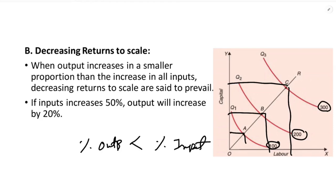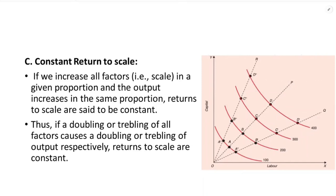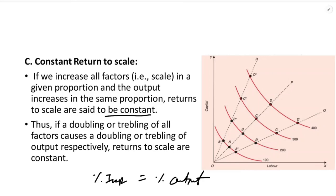The distance between the isoquants gradually increases in the case of diminishing returns to scale. The last one is constant returns to scale, which means when input increases, output increases in the same proportion. That is constant returns to scale. If we increase all factors in a given proportion and output increases in the same proportion, returns to scale are said to be constant. Thus, if a doubling or tripling of all factors causes a doubling or tripling of output respectively, returns to scale are constant.